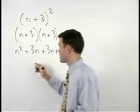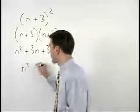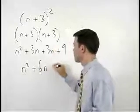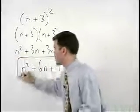Combining our middle terms, we have n squared plus 6n plus 9 for our final answer.